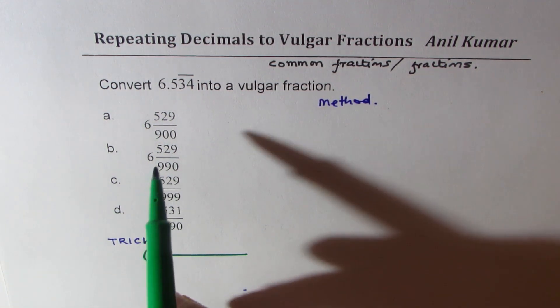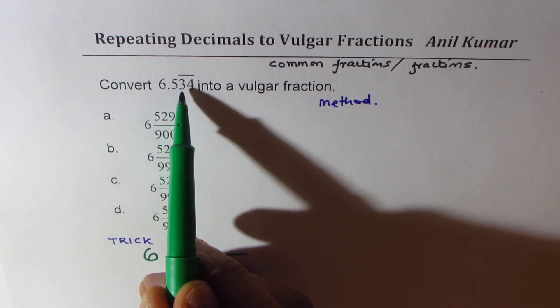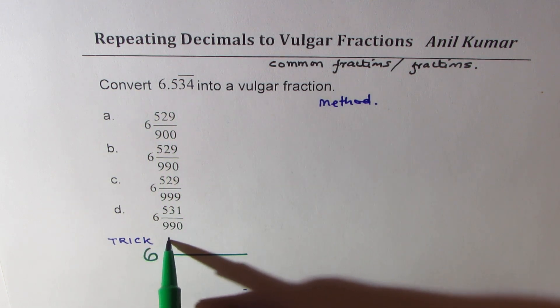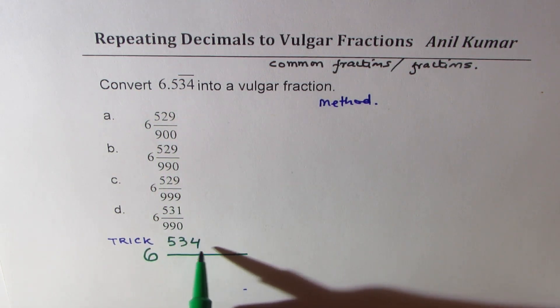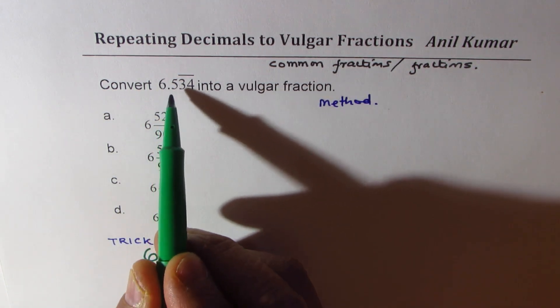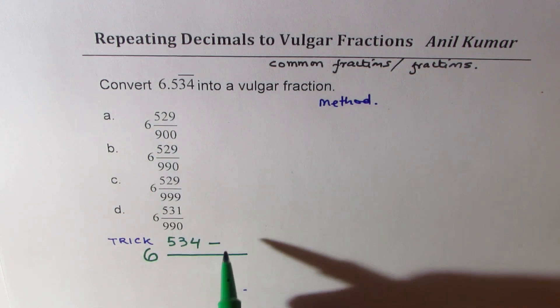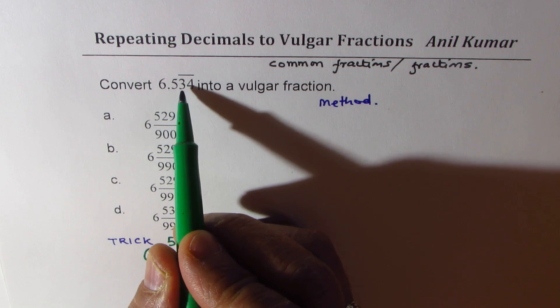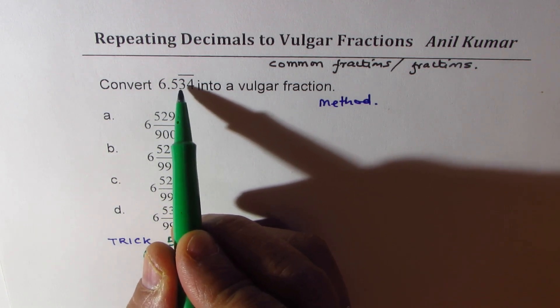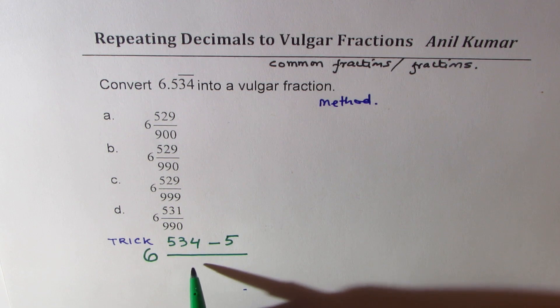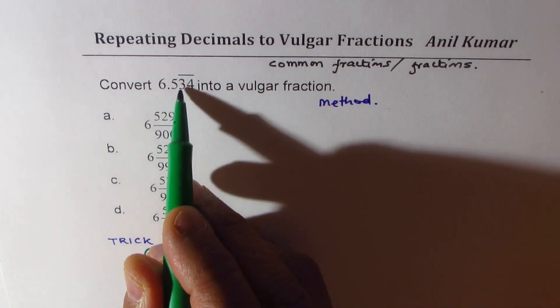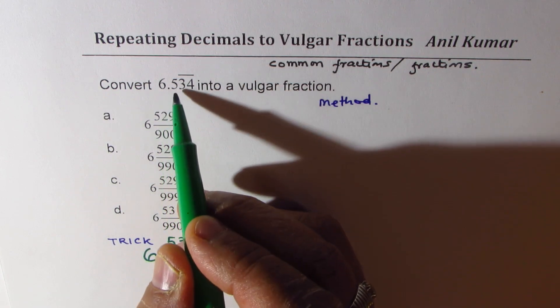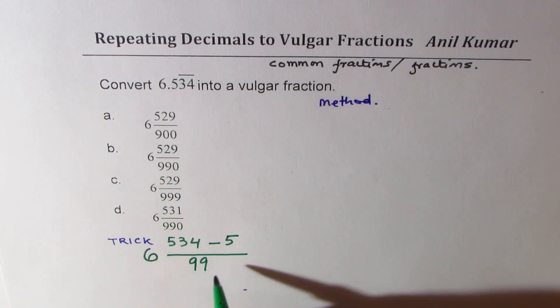What do we get in the numerator is 534 take away the number which is not being repeated which is 5, and we have to divide by how many numbers are repeating. 3 and 4 is repeating, so we'll replace 3 and 4 both by nines. We'll have two nines and numbers without repeating after decimal is only one.